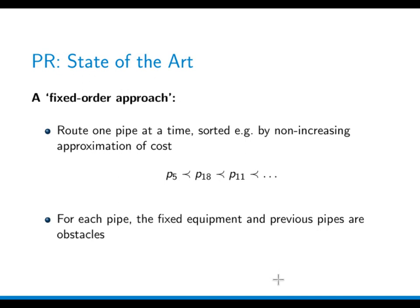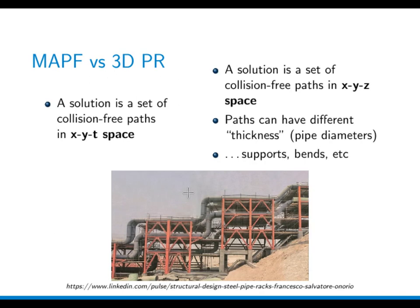Now we have several pipes and we need to route them in a conflict-free way. The state-of-the-art for multi-pipe routing was a so-called fixed-order approach: we construct a list of pipes in a certain order — for example by non-increasing cost approximations — and then route pipes sequentially, where each routed pipe becomes an obstacle for the remaining ones.